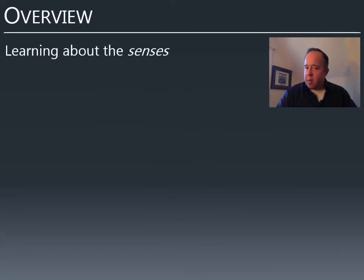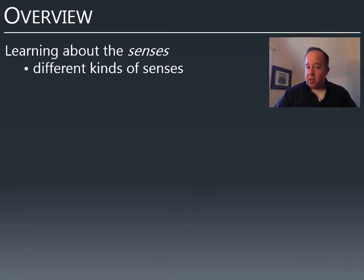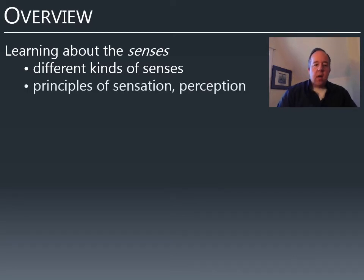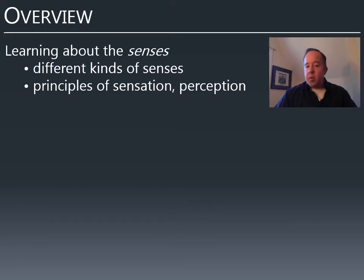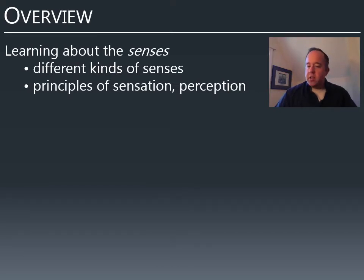We're learning about the senses for the next couple of lectures and we have different kinds. We often say that we have five senses — as we'll see, we have more than that. We'll talk about sensation and perception. Sensation, strictly speaking, is the stimulation of a sense organ. When we say we feel something, what we actually mean is perception. We perceive a stimulus and our perceptions are not always accurate. Our nervous system is certainly not perfect, and it also takes little shortcuts, so our senses can be inaccurate.